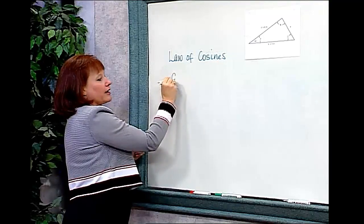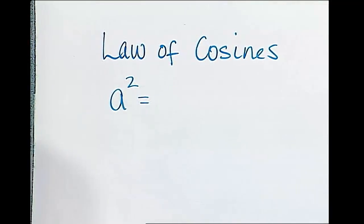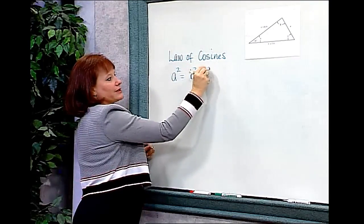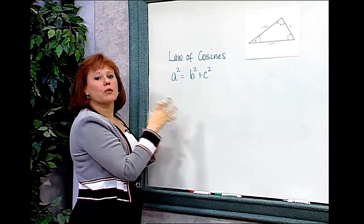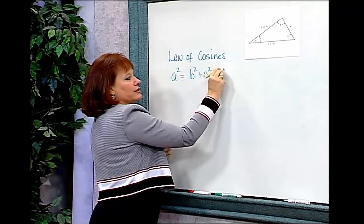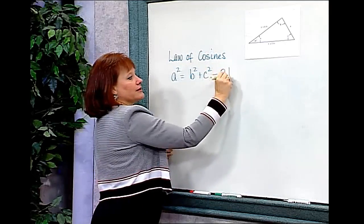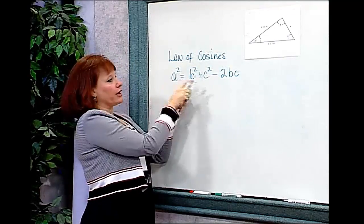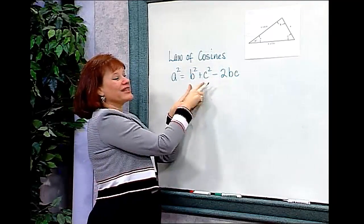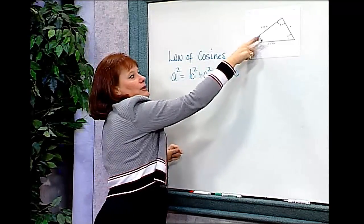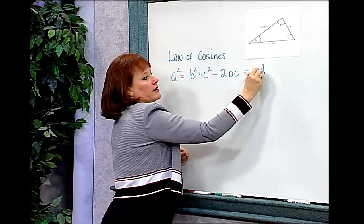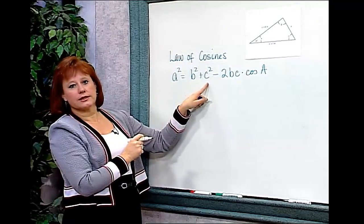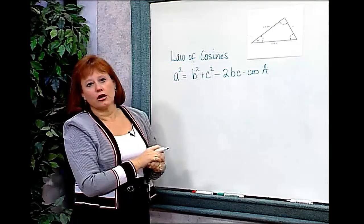If I want to find side A, I can say A squared, and I look at the other two sides, B and C. So I'll start out with A squared equals B squared plus C squared. It starts out looking a little bit like the Pythagorean theorem, but we add more to it: minus 2 times the product of these two sides, BC, multiplied by the cosine of the angle that is between them. In this case, the angle between them is A, so the cosine of A. So: A² = B² + C² − 2BC·cos(A).